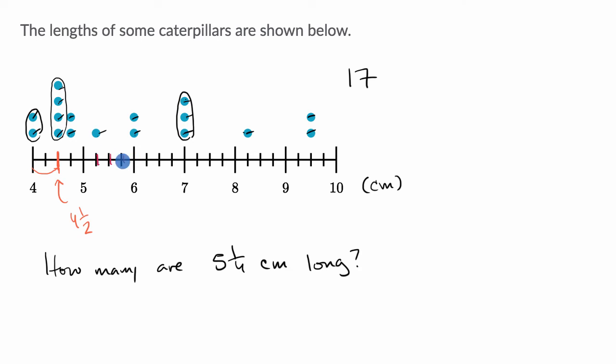Counting them: one, two, three, four equal sections, and we want to go one of those four sections. So five and one-fourth is right over here, and we can see that there's one caterpillar that is five and one-fourth centimeters long.